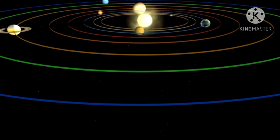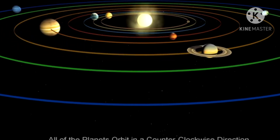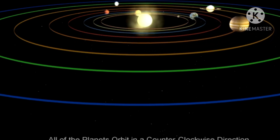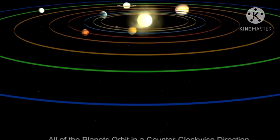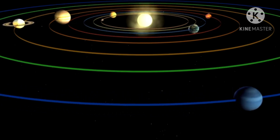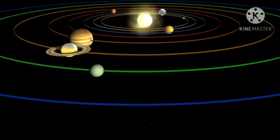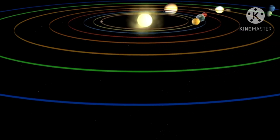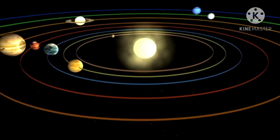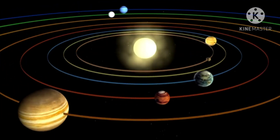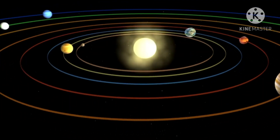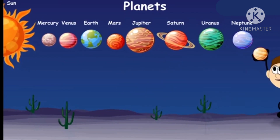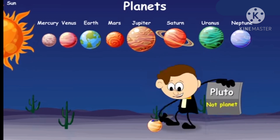When I was in school, I was taught that the solar system has one Sun and nine planets, and the ninth planet was Pluto. But now we talk about only eight planets, which does not include Pluto. So let's find out what happened to Pluto and why it is not a planet anymore. Pluto was discovered by Clyde Tombaugh in 1930.